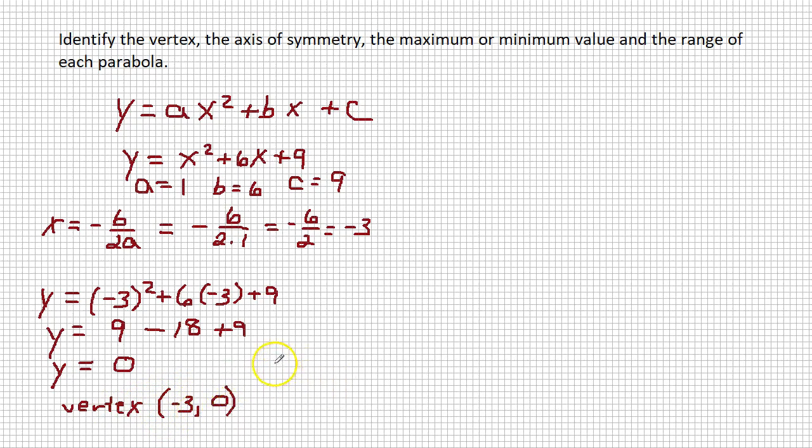So our vertex is the point negative 3 comma 0. Our axis of symmetry is the vertical line x equals negative 3.